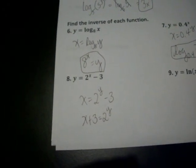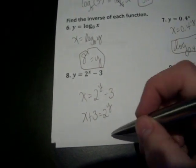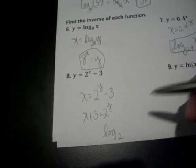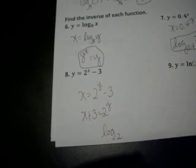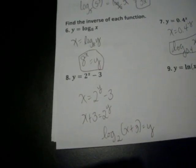And now that I have this in exponential form, now I'm going to rewrite it into log form. So my base is 2 of X plus 3 equals Y.